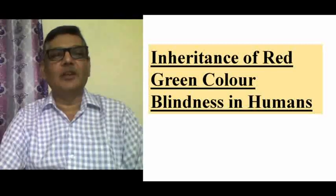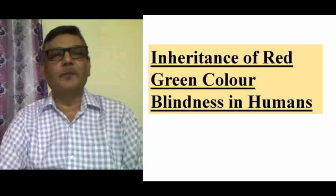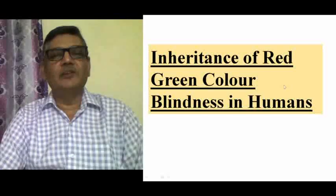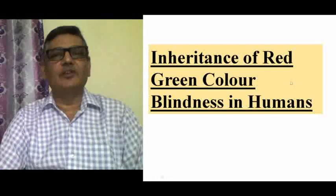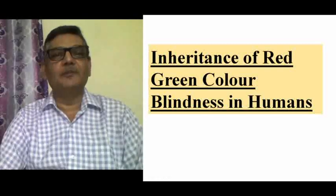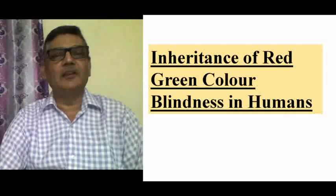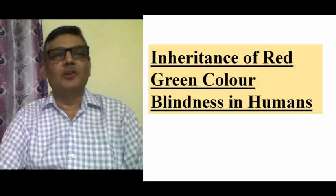Out of these three different cases, I'm going to take up red-green color blindness. In the human population, it is a trait which is sex-linked — that is, the gene deciding red-green color blindness is situated on the X chromosome, which is why it is a sex-linked trait and gets inherited from parents to offspring.